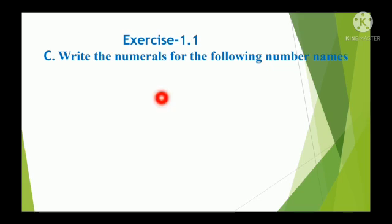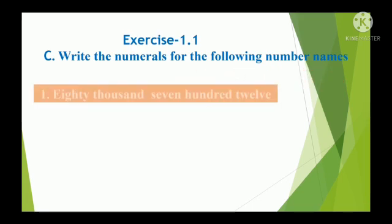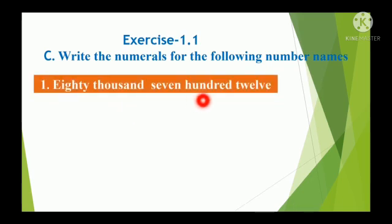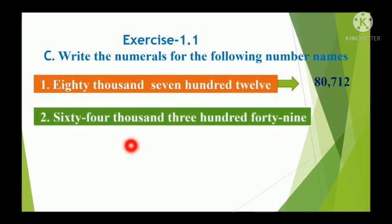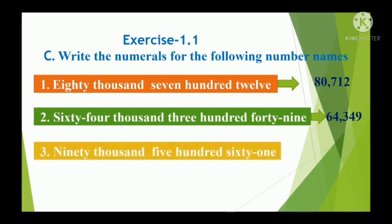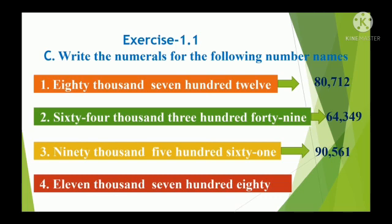Exercise 1.1c: Write the numerals for the following number names. The numeral for eighty thousand seven hundred and twelve is 80,712. The numeral for sixty-four thousand three hundred and forty-nine is 64,349. The numeral for ninety thousand five hundred and sixty-one is 90,561. And eleven thousand seven hundred and eighty is 11,780.